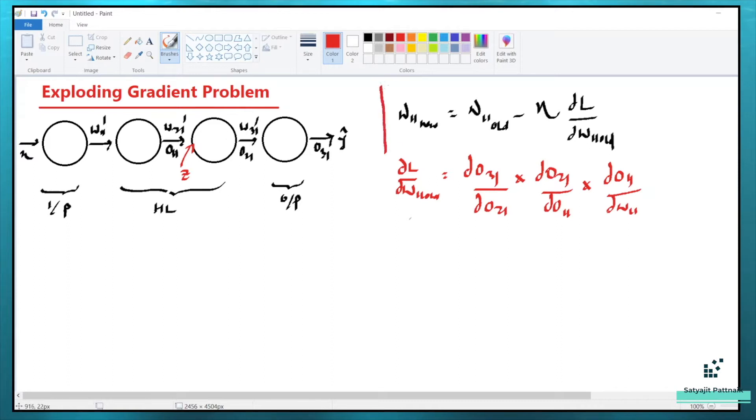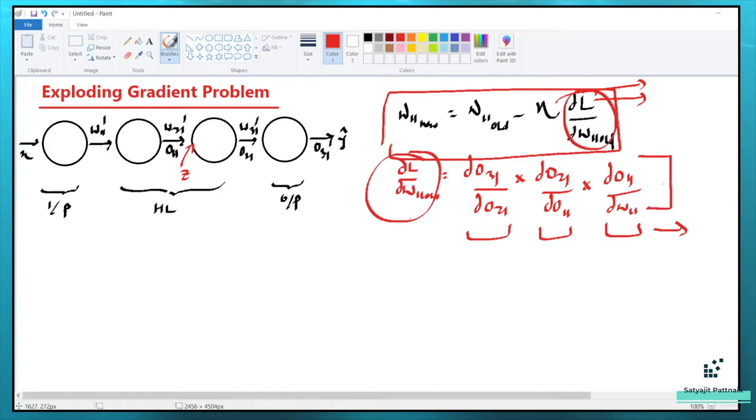So W11 new equals W11 old minus eta multiplied with the loss function, DL by DW11 old. This is my loss function, this is my learning rate. And if I explain about the chain rule of backpropagation, if we have n number of hidden layers, there will be n number of multiplications here. When we backpropagate in a neural network, changes with respect to W31 is impacted here and then here. So W11 dash is impacted by O11, O21 and O31 as well. This is the chain rule of backpropagation.